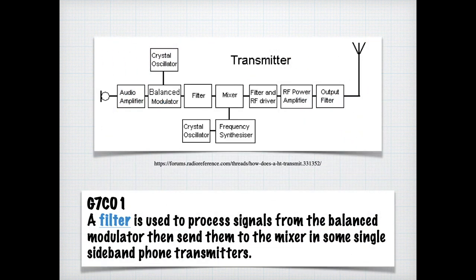And the first thing we need to know is that a filter is used to process signals from a balanced modulator, then sends them to a mixer and the same signal sideband phone transmitters. And you can tell by the block diagram here that right out of the balanced modulator passes through a filter and straight into the mixer, just like the question says.